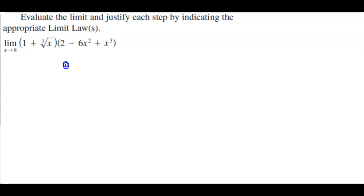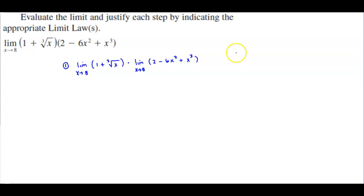The first step is that we have the limit as x approaches 8 of 1 plus the cube root of x, times the limit as x approaches 8 of 2 minus 6x squared plus x cubed. That's limit law number 4.